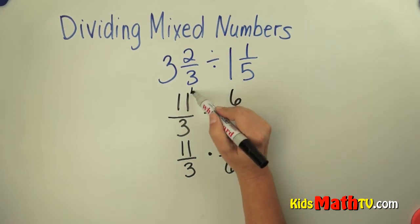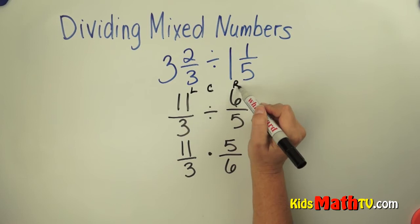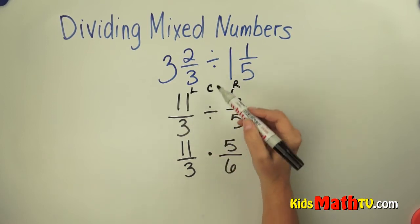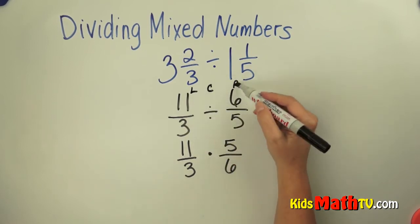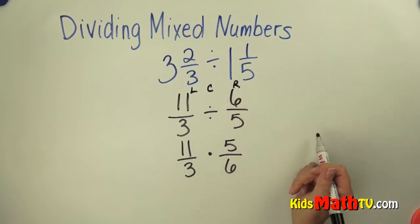Okay? So this is the leave, change, reciprocal. Leave the first fraction. Change the division to multiplication. And use the reciprocal of the second fraction.